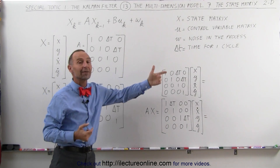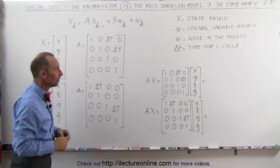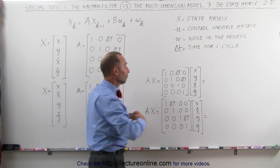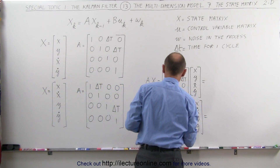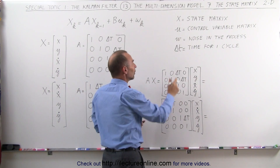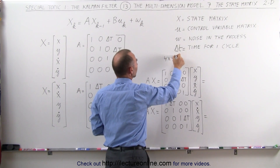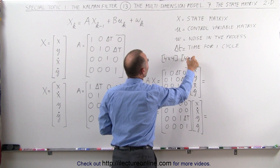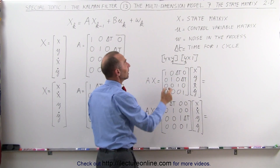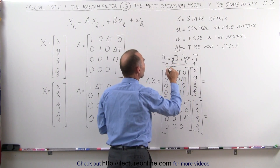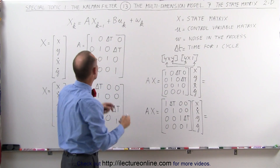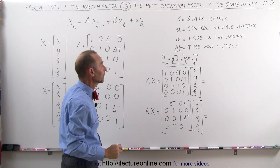Remember that delta T is simply the time for a single cycle. Let's go ahead and multiply the two matrices together to see what we get. In the first case, size-wise we're multiplying a 4×4 matrix with a 4×1 matrix. The inner numbers are the same, which means the multiplication is legal, and the outer numbers indicate the size of the resulting product — we're going to end up with a 4×1 matrix, which is what we're expecting for the updated state matrix.